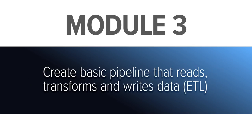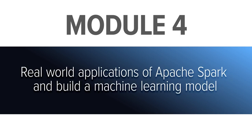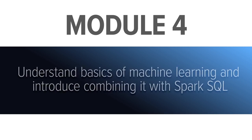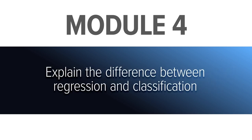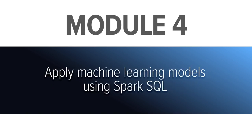At the end of this third module, you'll be able to create a basic pipeline that reads, transforms, and writes data — a process known as ETL. Lastly, we will cover the real-world applications of Apache Spark and build a machine learning model for our dataset. We'll cover the basics of machine learning at a high level and introduce how we can combine machine learning with Spark SQL. After this week, you'll be able to explain the difference between regression and classification and apply machine learning models using Spark SQL.